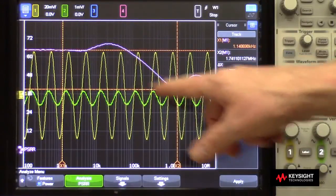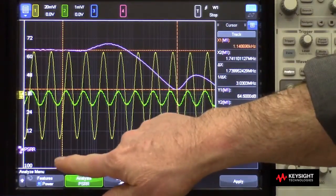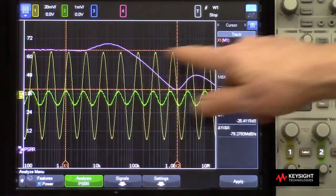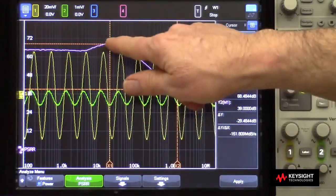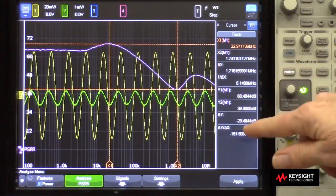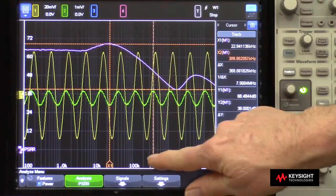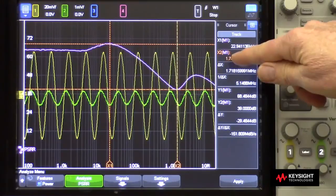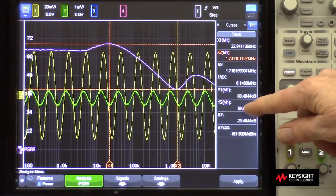When the sweep is completed, the scope automatically turns on the cursors and tracks them to the PSRR plots. So up here at the lower frequencies, we can see we were getting about 64 dB of rejection. The maximum rejection occurred about here. It was about 68 dB. And down here we can see a dip. And that dip occurred at approximately 1.74 megahertz. And the rejection was about 39 dB.